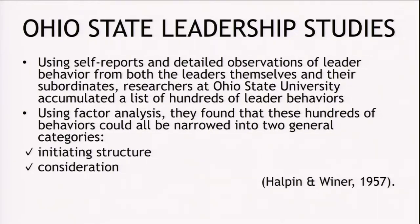Let us start off with Ohio State leadership studies. Using self-reports and detailed observations of leader behavior, both from the leaders themselves and their subordinates, the research team accumulated a list of hundreds of leader behaviors. Then they used factor analysis and found that these hundreds of behaviors could be narrowed into two general categories: the first is titled initiating structure and the second is consideration. These two evolved as major categories of behavior.